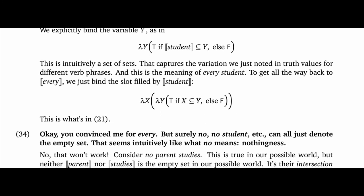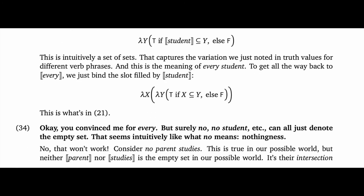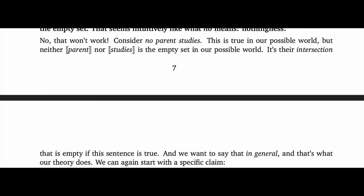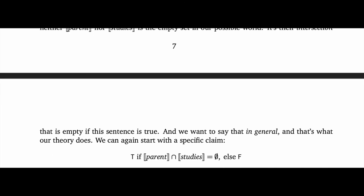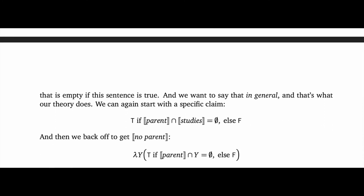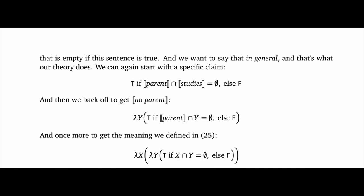Consider no parent studies. This is true in our possible world, but neither the set of parents nor the set of things that study is empty in our possible world. It's their intersection that's required to be empty if this statement is true. And we want to say that in general, and that's what our theory does. We can start again with a specific claim: the set of parents and the set of things that study is empty. We back off to get the meaning of no parent by abstracting out the second slot and adding lambda y. Then we do that once more and we've got the meaning for no from 25.